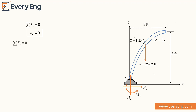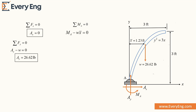Now we find the vertical reaction at support A. The summation of all forces in the y-direction equals zero. In the y-direction there are two forces: AY minus the weight of the uniform rod equals zero. So the vertical reaction at the fixed support is equal to the weight of the uniform rod, which is 26.62 pounds. To find the moment about point A, the weight is 26.62 pounds and the centroid is 1.23 feet, giving a moment MA of 32.74 pound-feet. These are the reactions at the fixed support at A.